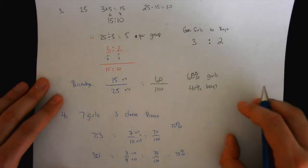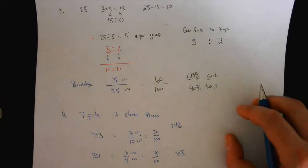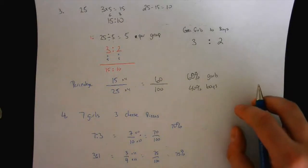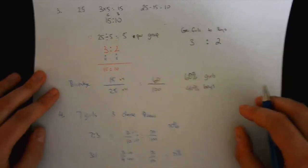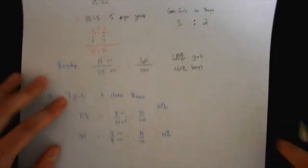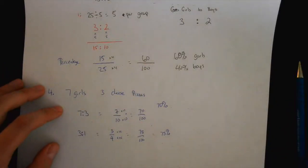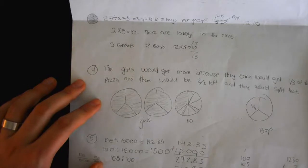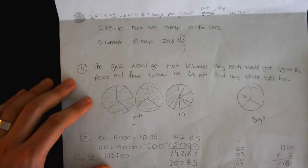Did anyone get a different answer? I'll be honest with you, when I solved this, I did not solve it like this. But that's okay. The first thing we did is that we drew the pizzas out, so we actually drew up three pizzas. Can I see it? Let's come up and show it. Let's do it. Okay, so the girls would get more. You're saying the girls would get more.